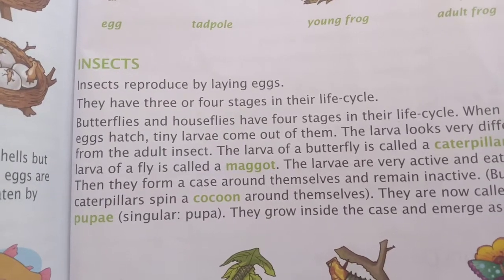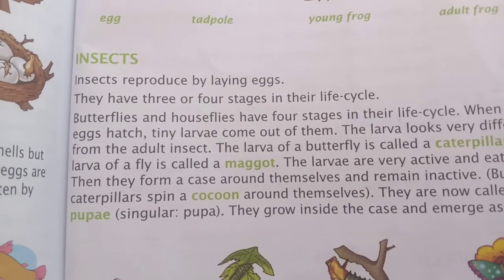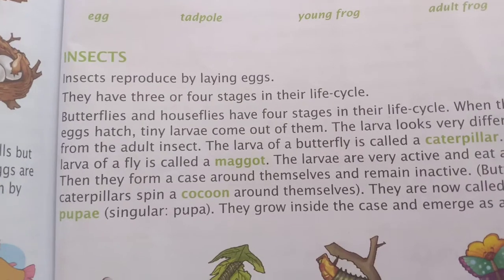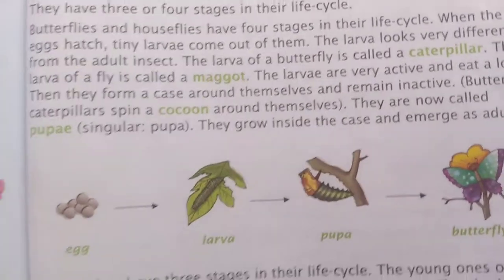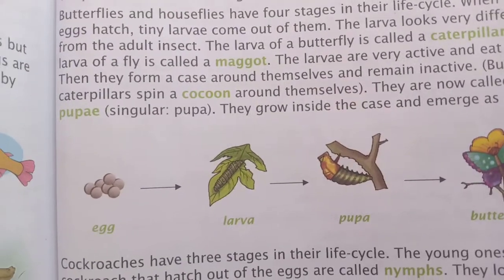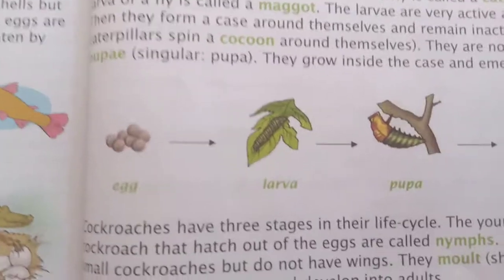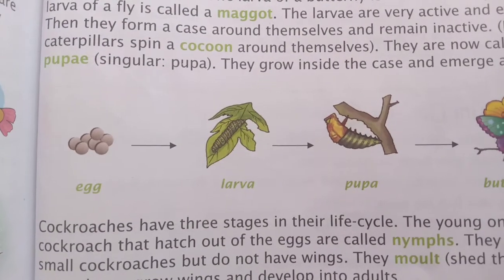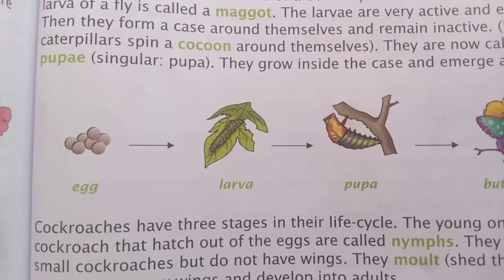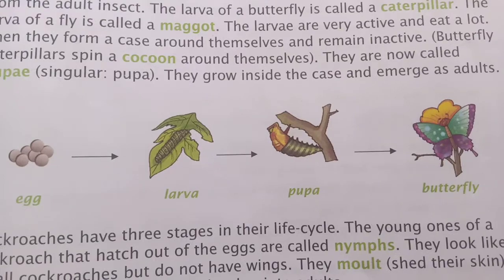Insects reproduce by laying eggs. They have 3 or 4 stages in their life cycle. The first stage is egg, then larva — as you can see in this video — then pupa, then butterfly.